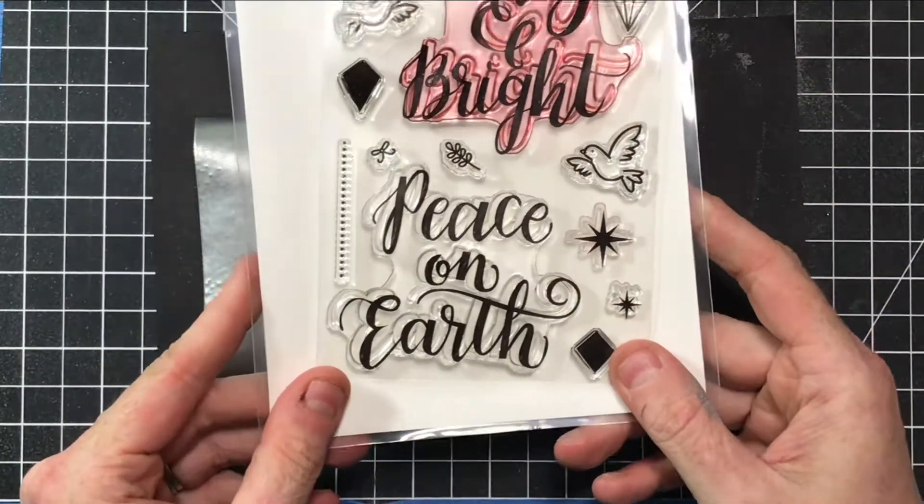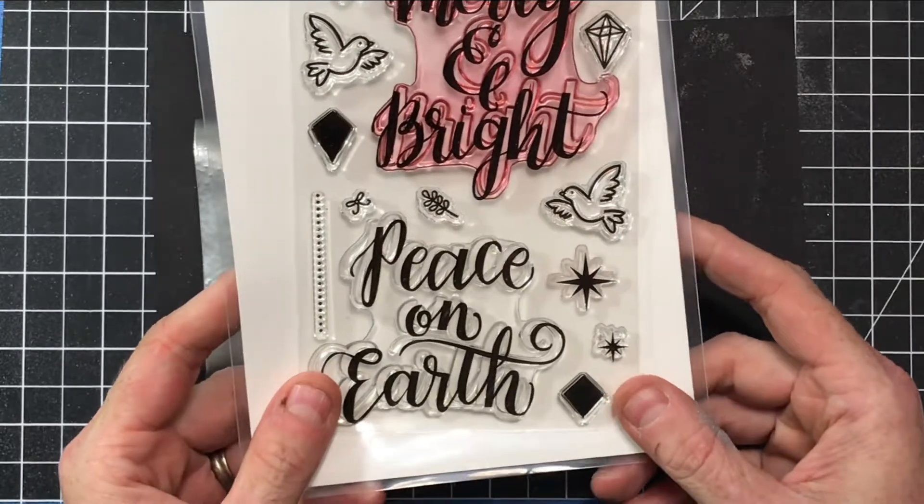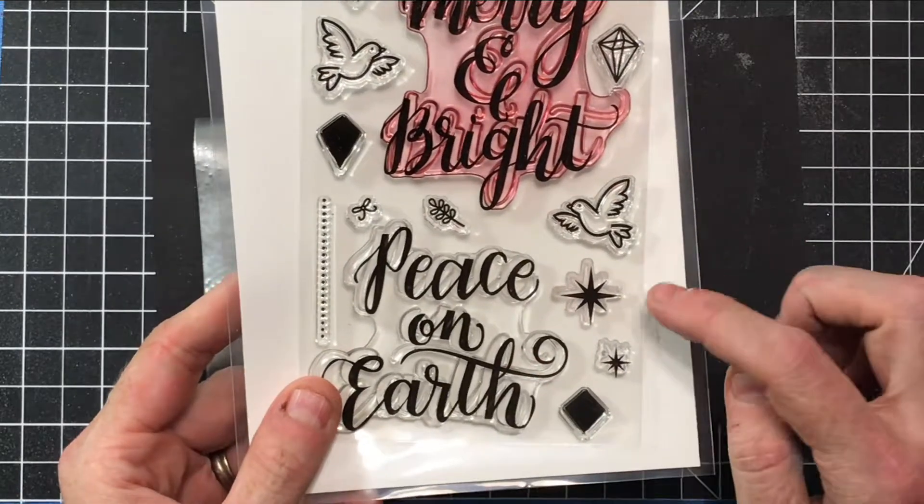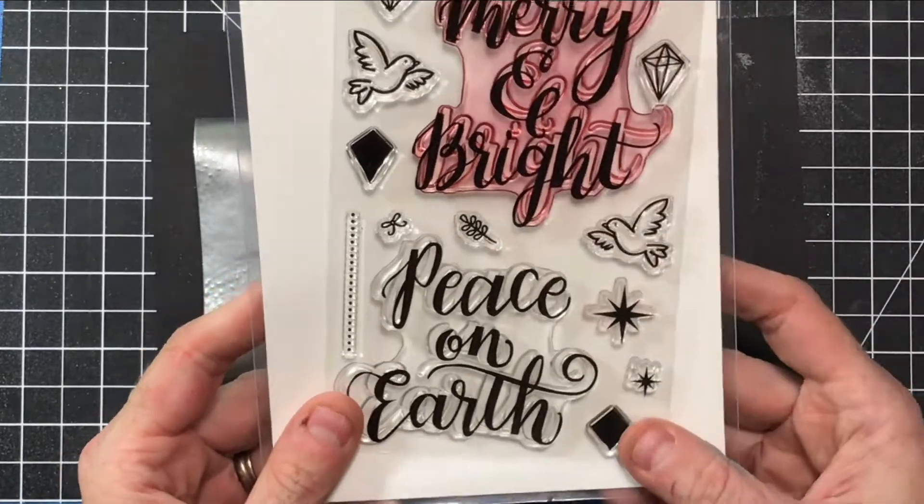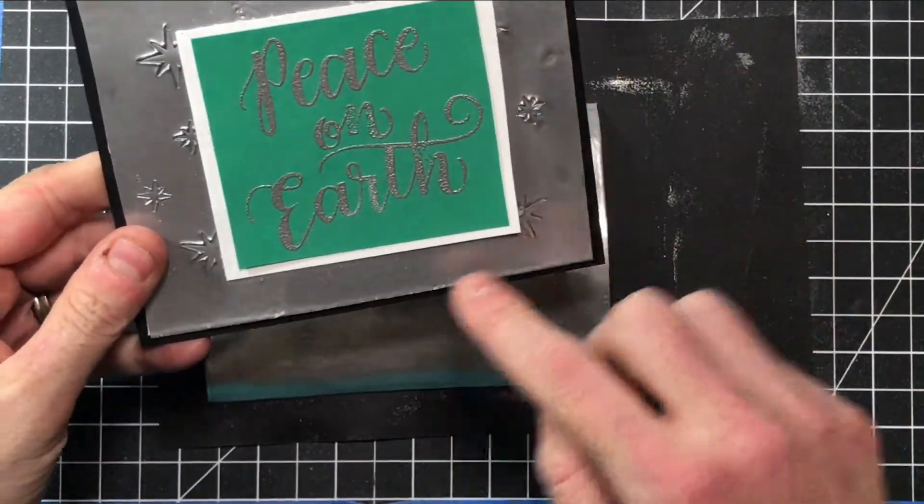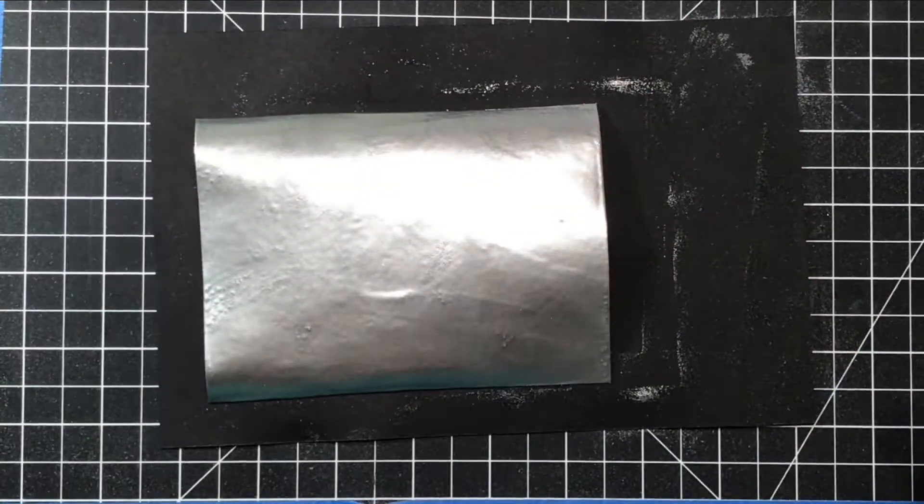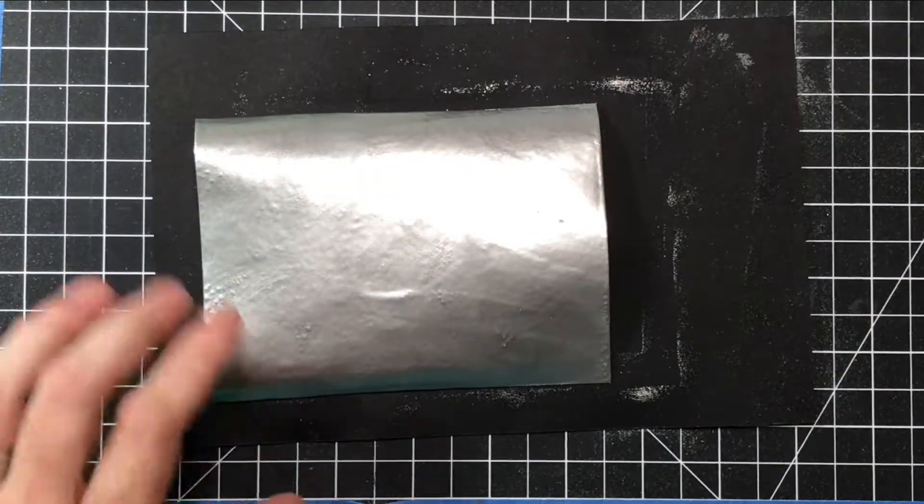Again, this is a very time-consuming ordeal but it's well worth it. We're going to use Mama Elephant's Peace on Earth set. There you can see the faux metal accents that I've created in the powder. This